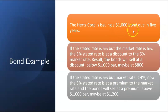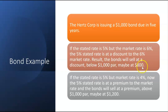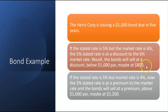Here's an example: Hertz Corp is issuing a $1,000 bond due in five years. If the stated rate is 5% but the market rate is 6%, the 5% stated rate is at a discount to the 6% market rate, and the bonds will sell at a discount — below $1,000 par, maybe at $800. If the bonds sell at $800 instead of $1,000, the true percentage cost of borrowing would be 6% instead of 5%, because the company is only taking in $800 but pays interest on the full $1,000.